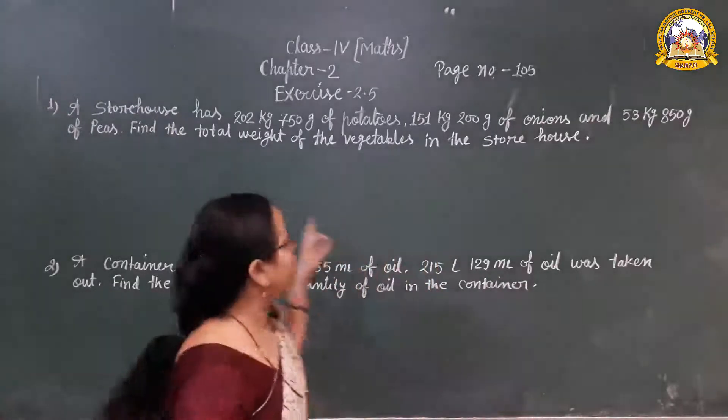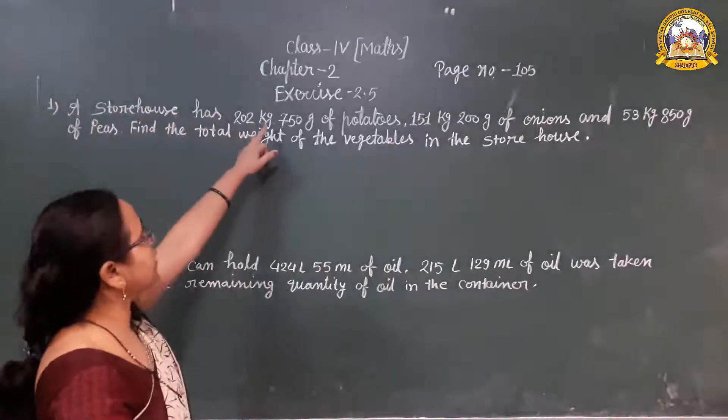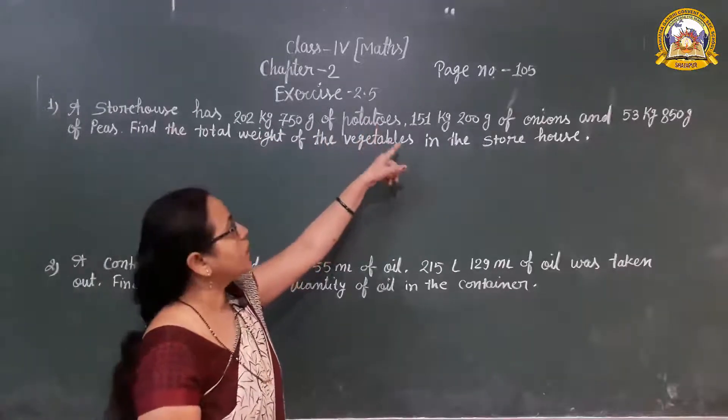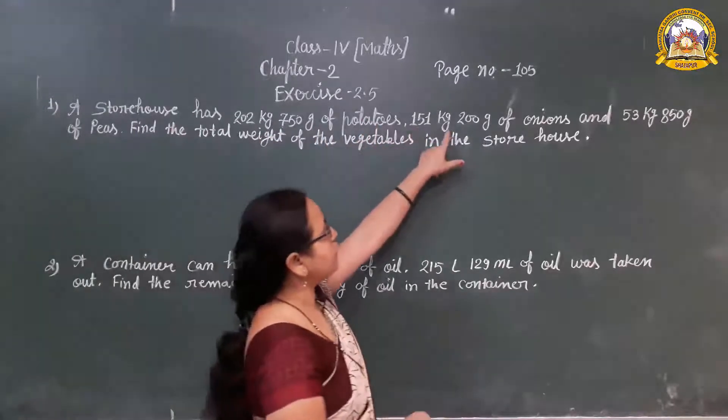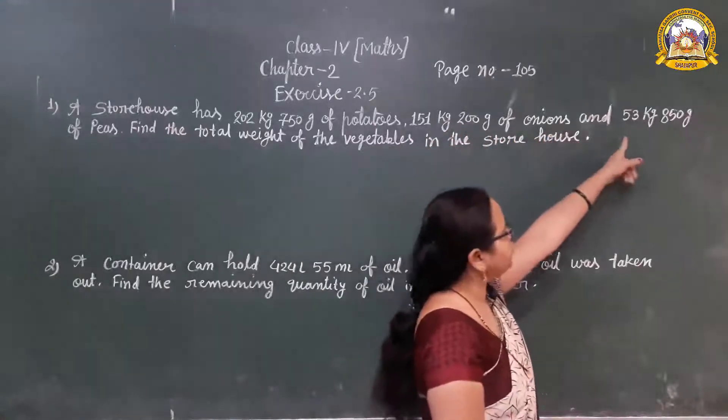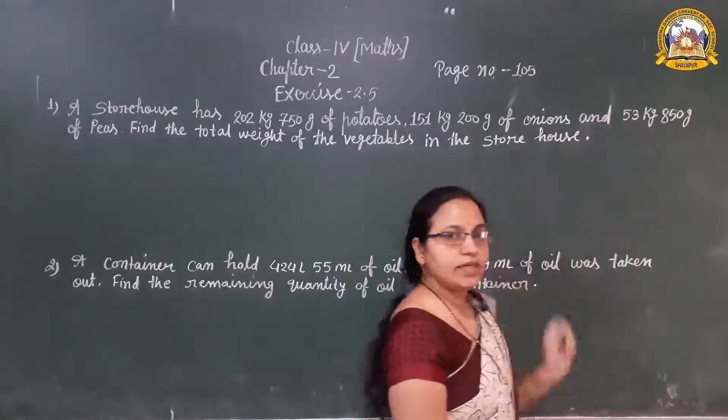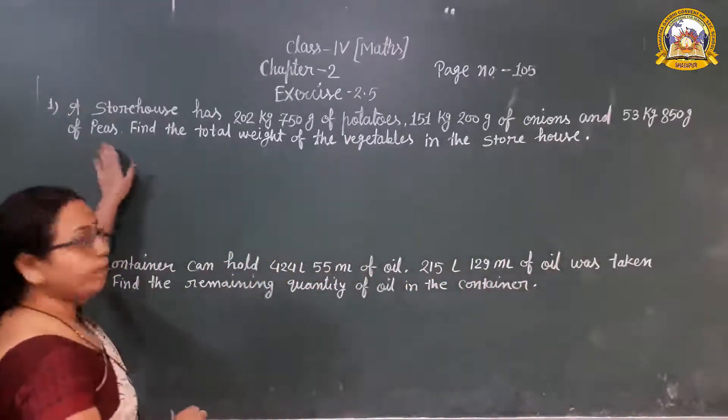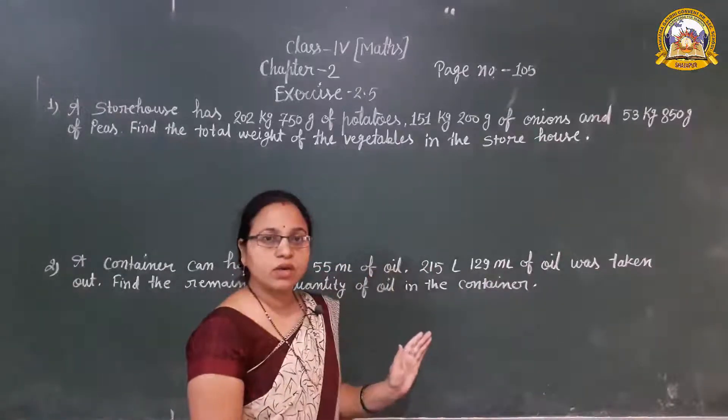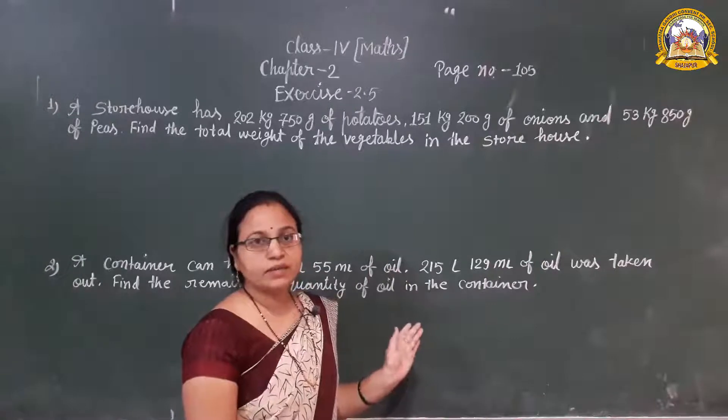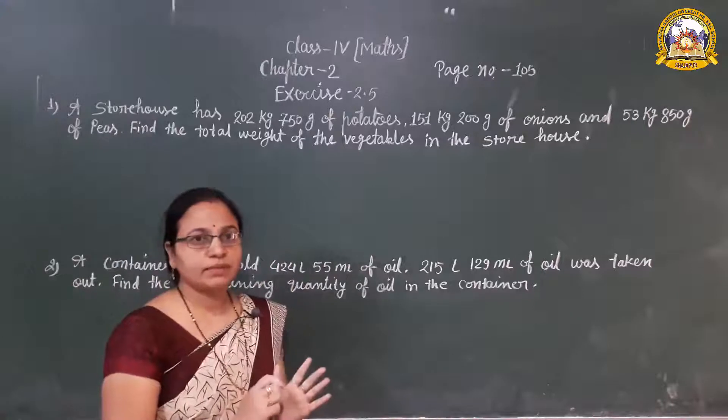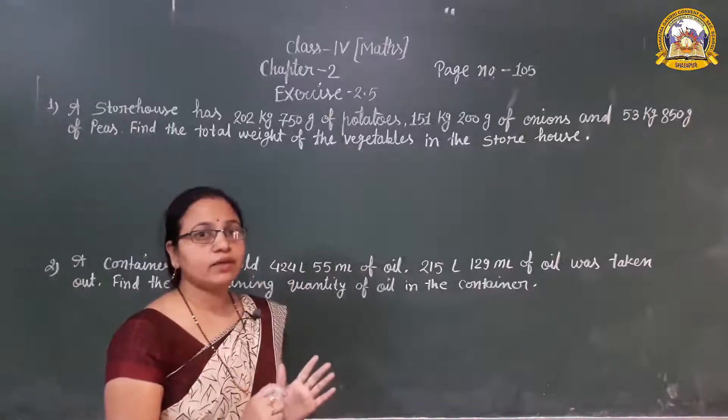A storehouse has 250 kg—750 kg of potatoes, 155 kg—200 kg of onions, and 53 g—850 g of peas. Find the total weight of the vegetables in the storehouse. Which operation we have to apply here? Here is asking the total weight of the vegetables, that means we are using addition.